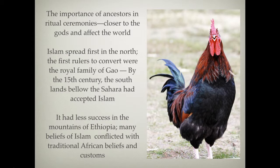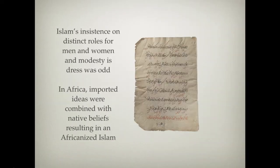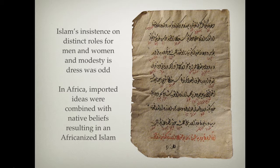A great example of conflict would be modesty among females. Islam demanded very modest behavior and very modest coverings, but you don't see that in traditional African culture — largely because of the climate, most women don't wear much. Islam's insistence on discrete roles for men and women and modesty in dress was at odds with everything that was going on. So Islam and indigenous African traditions were at a pressing point, but ultimately important Islamic ideas were combined with native beliefs, resulting in an Africanized Islam.